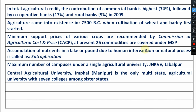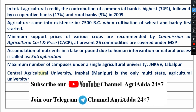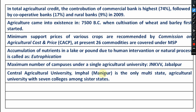Which agricultural university has the maximum number of campuses under a single university? That is JNKVV — Jawaharlal Nehru Krishi Vishwa Vidyalaya — situated at Jabalpur, Madhya Pradesh. The Central Agricultural University at Imphal, Manipur is the only multi-state agricultural university with seven colleges among the seven sister states.